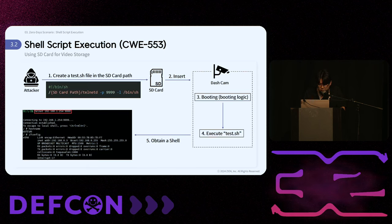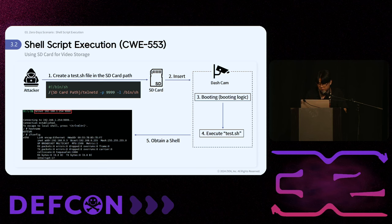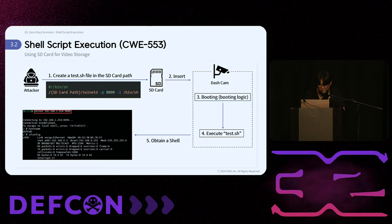The use of an SD card is associated with shell script execution vulnerabilities. The boot script includes code that executes a test shell from the SD card path. An attacker can create a test shell file on the SD card with a script using a telnetd binary to open a Telnet connection. When the SD card is inserted into the dashcam and the device is booted, the boot script runs the test shell, which enables Telnet access and allows the attacker to gain a shell.